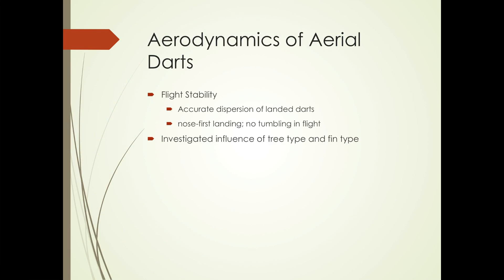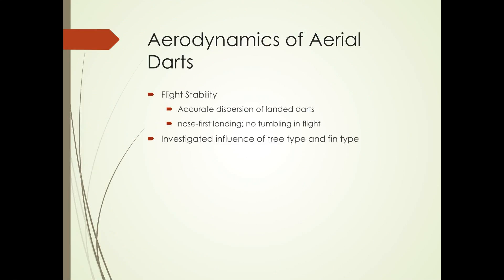And this is for two main reasons. First of all, to ensure accurate dispersion of these landed darts — in other words, so you can predictably determine where these darts are going to land. And secondly, to ensure that the dart lands nose first into the ground and doesn't tumble in flight. Because if it lands sideways, then the tree won't be planted properly.